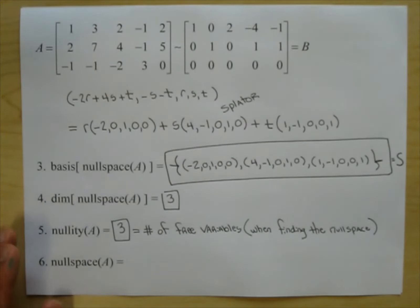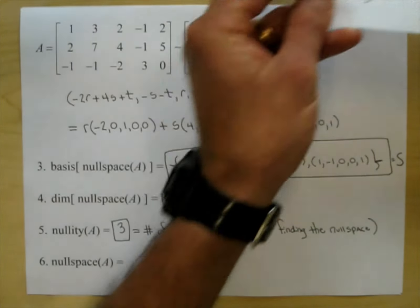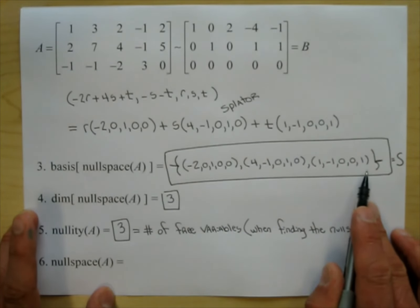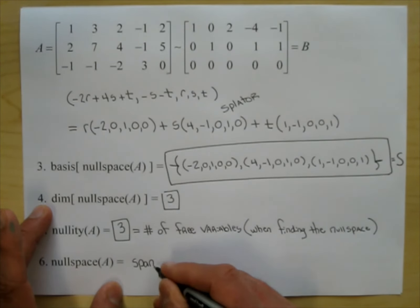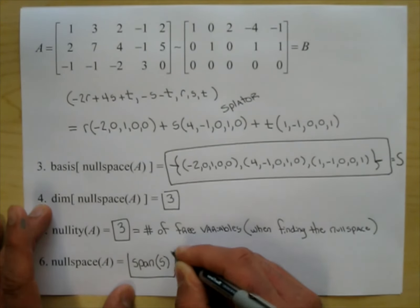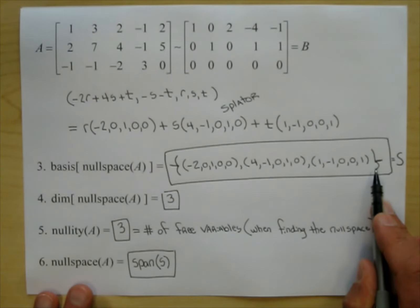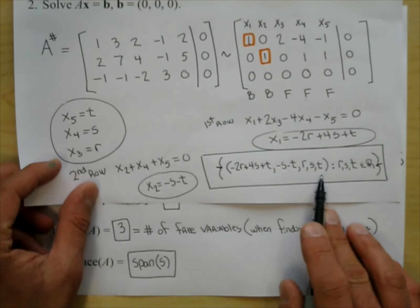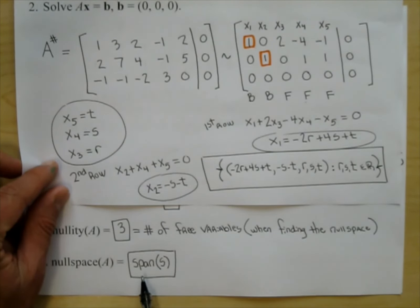The null space is the span of those vectors. The more professional way is to write the null space as span of S. Whenever we describe a vector space or subspace, we want to write the span of a basis — that's the simplified form, like writing one-half instead of two-fourths.